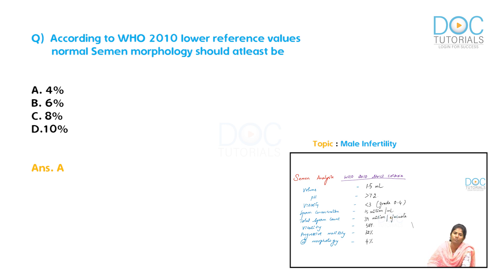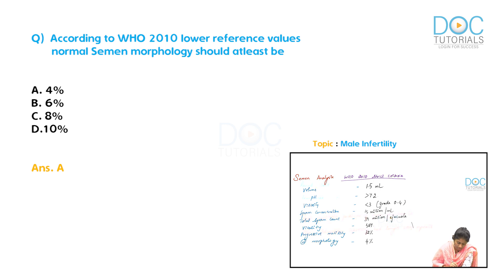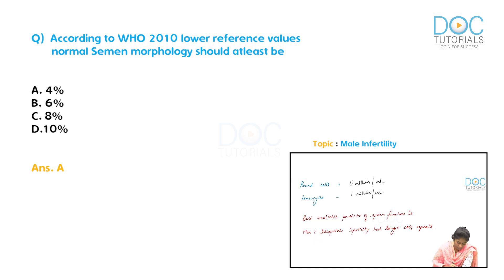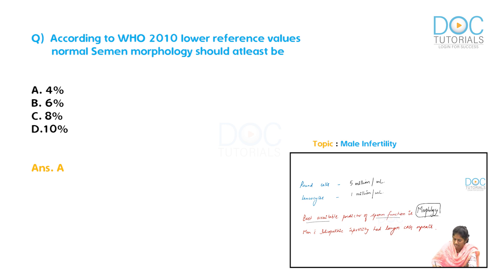Out of all semen parameters, the question asking for the best predictor of semen quality — the answer is morphology. The best available predictor of sperm fertilizing function is morphology. This is a very important MCQ that appeared in the 2019 AIIMS exam.